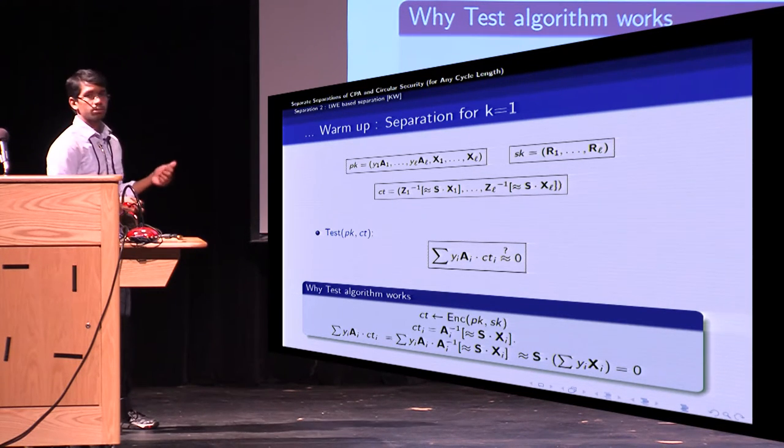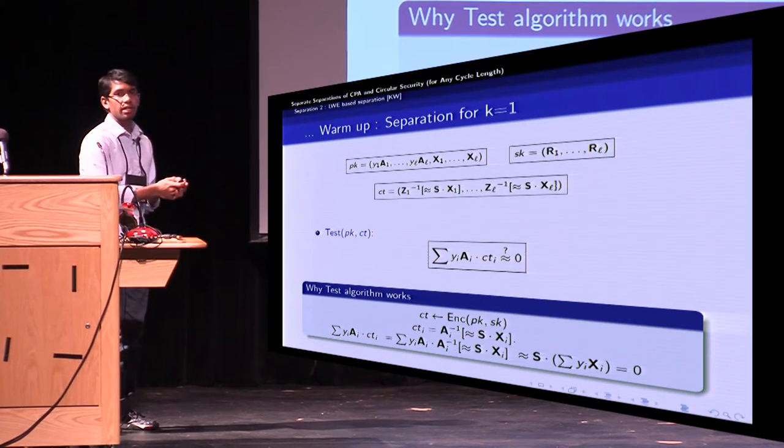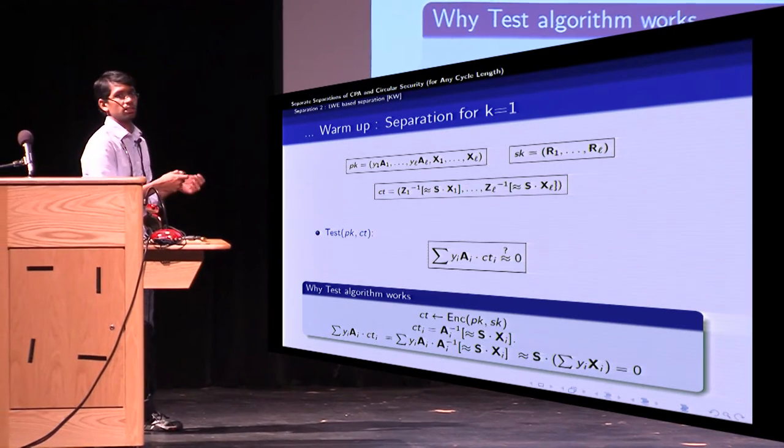So in this way, if you have an encryption of the secret key, then the test algorithm outputs zero, or a short matrix. And instead, if you have an encryption of zeros, then the final matrix that you get is some large matrix, and hence you can distinguish between the two scenarios.